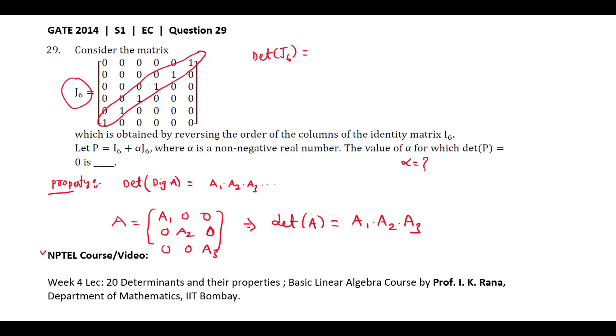All the product of diagonal elements is 1. The determinant of J6 matrix is 1. And similarly, the identity matrix I6, the determinant of matrix I6 is also 1.